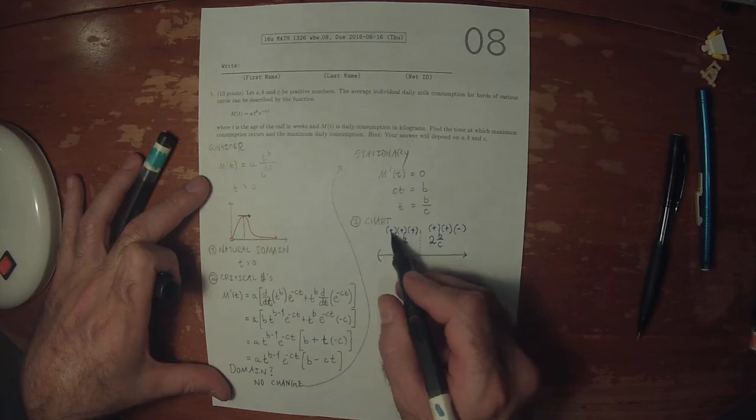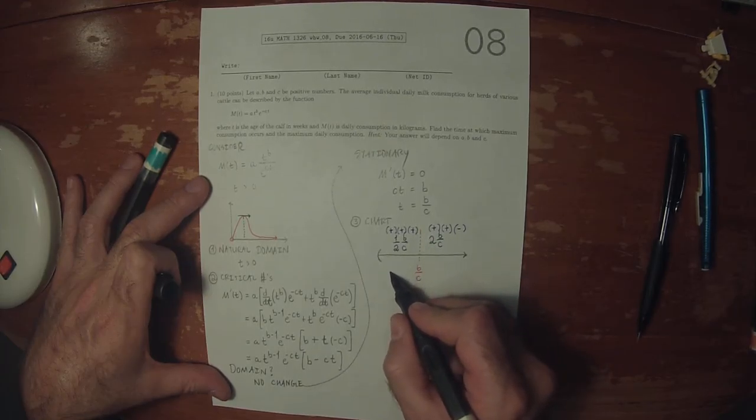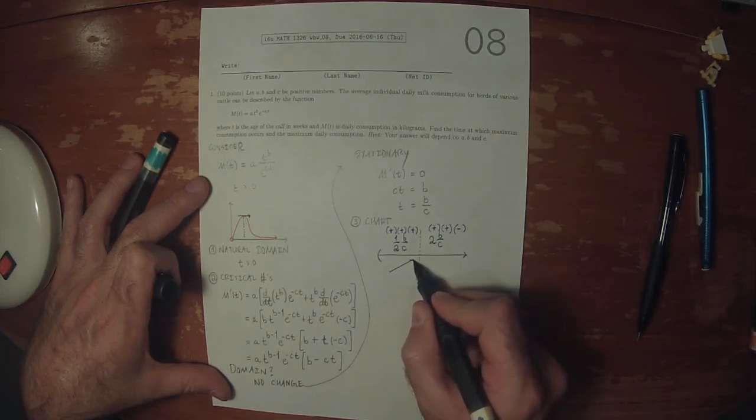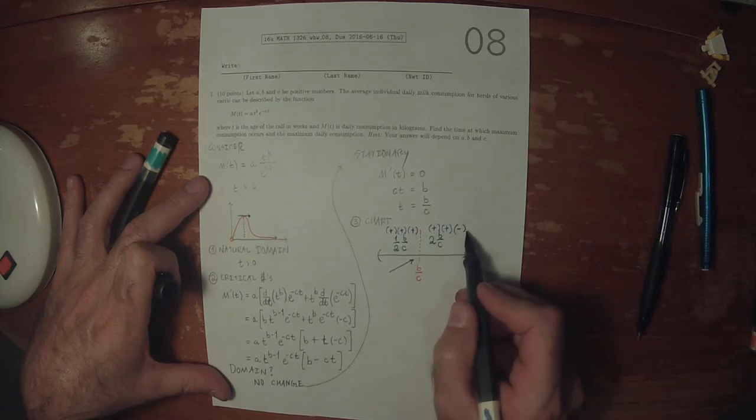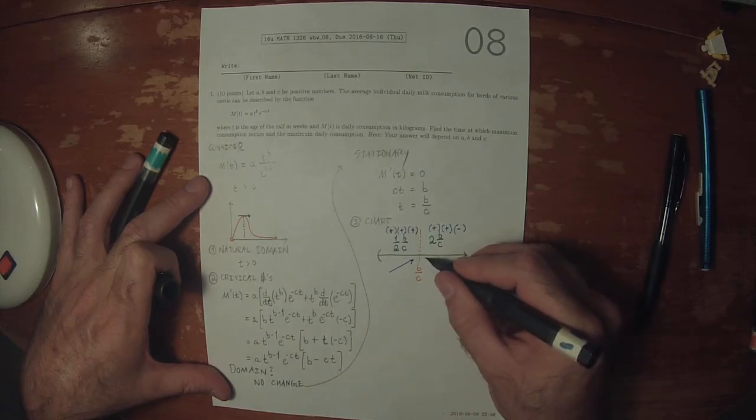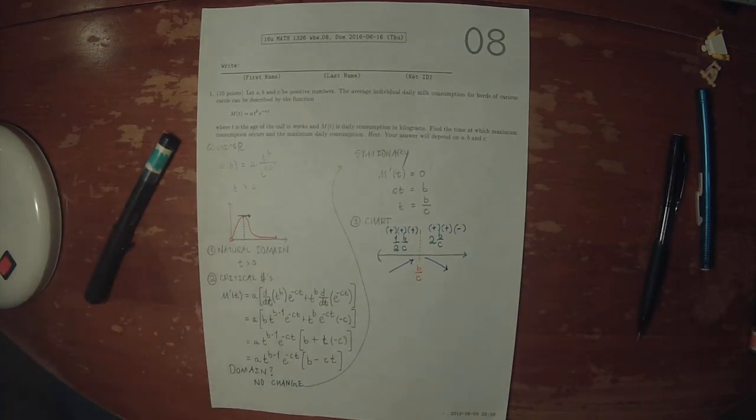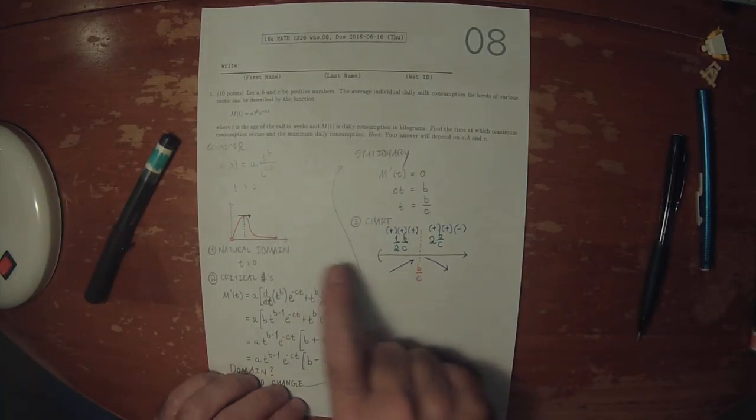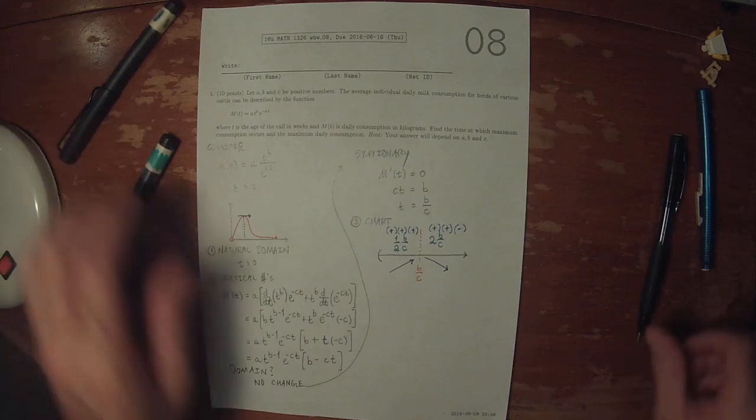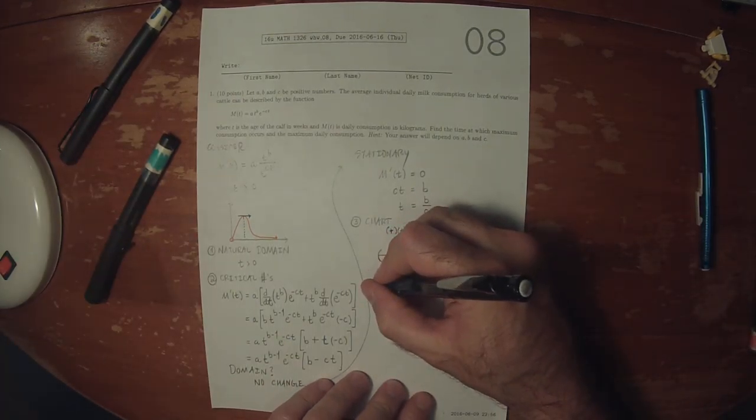So then the overall sign in this region is positive, so that's positive slope. The overall sign in this region is negative, so that's negative slope. And so again, the expectation bears out. So we can make our conclusion.